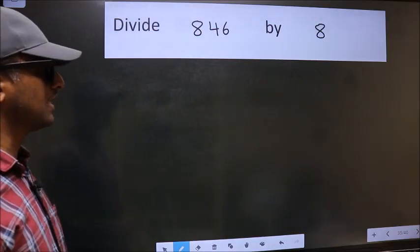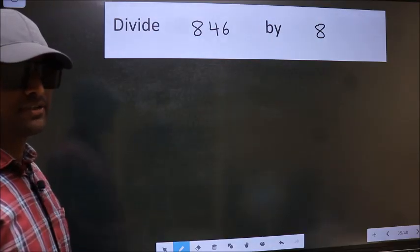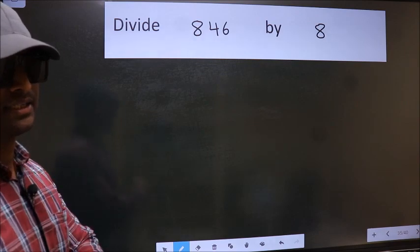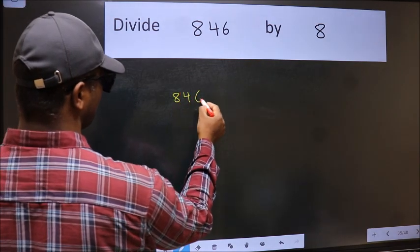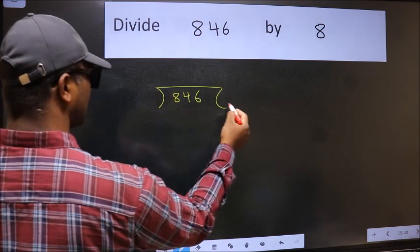Divide 846 by 8. To do this division, we should frame it in this way: 846 here and 8 here.